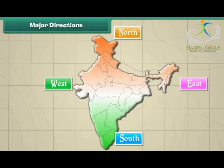Major Directions. There are four main directions. They are north, east, south and west. The four letters N, E, S and W represent these directions.